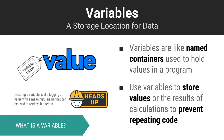Computers don't automatically remember things unless we tell them to do so. Any information that is important to your program that you want the computer to remember must be stored in something called a variable. A variable is like a named storage container for information. When you create a variable and assign it a value, the computer will remember it and you will be able to refer to it later on as needed in your program.